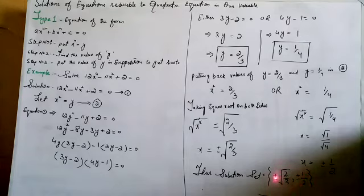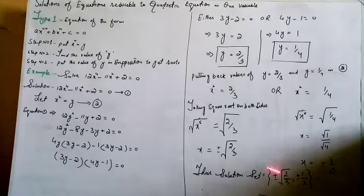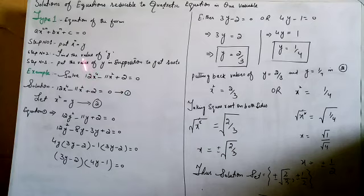We can now see that we have four roots: -√(2/3), +√(2/3), -1/2, and +1/2. This makes sense because the highest power of the equation is 4, so we must have four roots. Thank you.